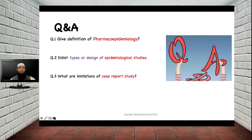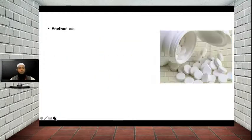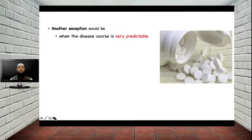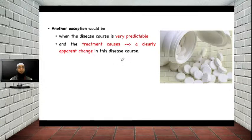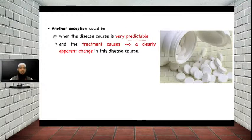Now let's move to the second part of the session. Another exception for directly making a statement about causation is when the disease course is very predictable. If the disease course is very predictable, you can make the statement because it is related to exposure of the drug and it is easily predicted that the problem is due to the drug. A second condition is when the treatment causes a clearly apparent change in the disease course. We will see this with case study 3.